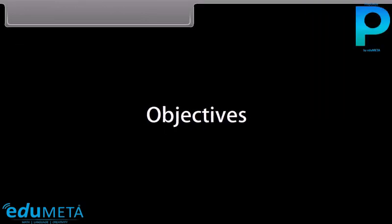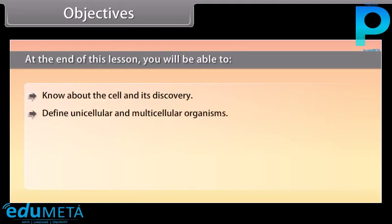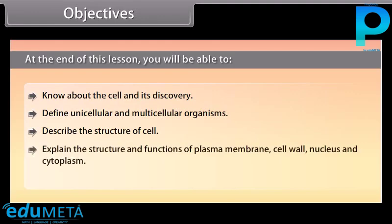Objectives: At the end of this lesson, you'll be able to know about the cell and its discovery, define unicellular and multicellular organisms, describe the structure of the cell, and explain the structure and functions of the plasma membrane, cell wall, nucleus, and cytoplasm.